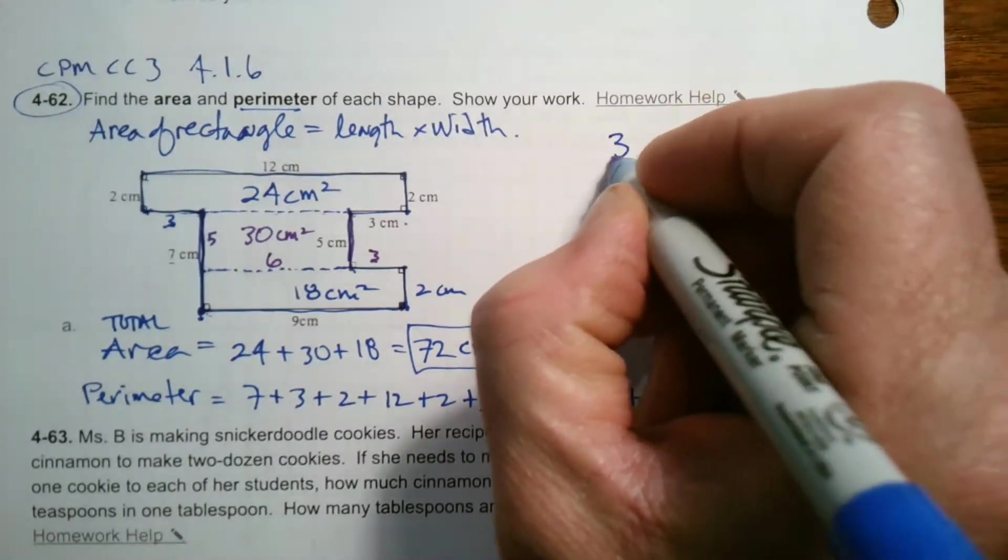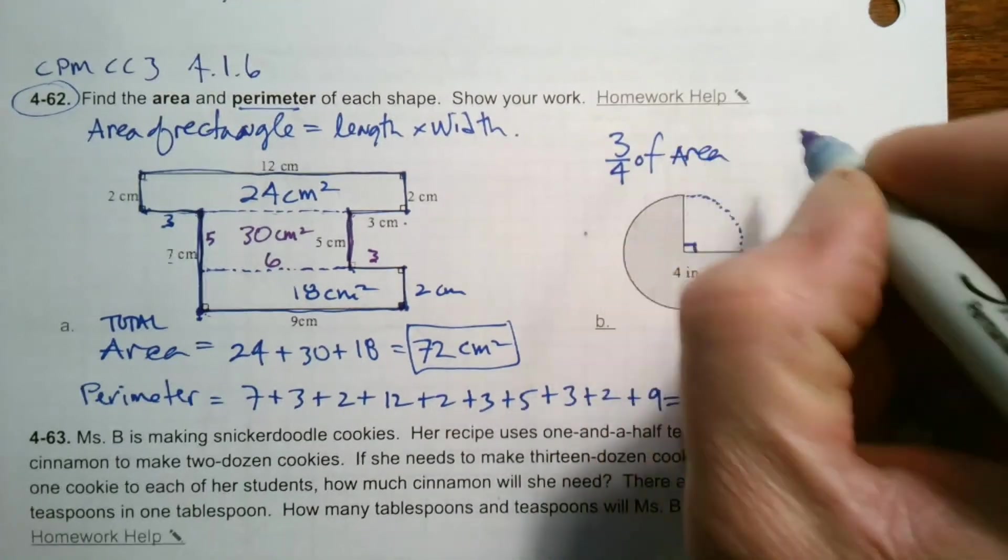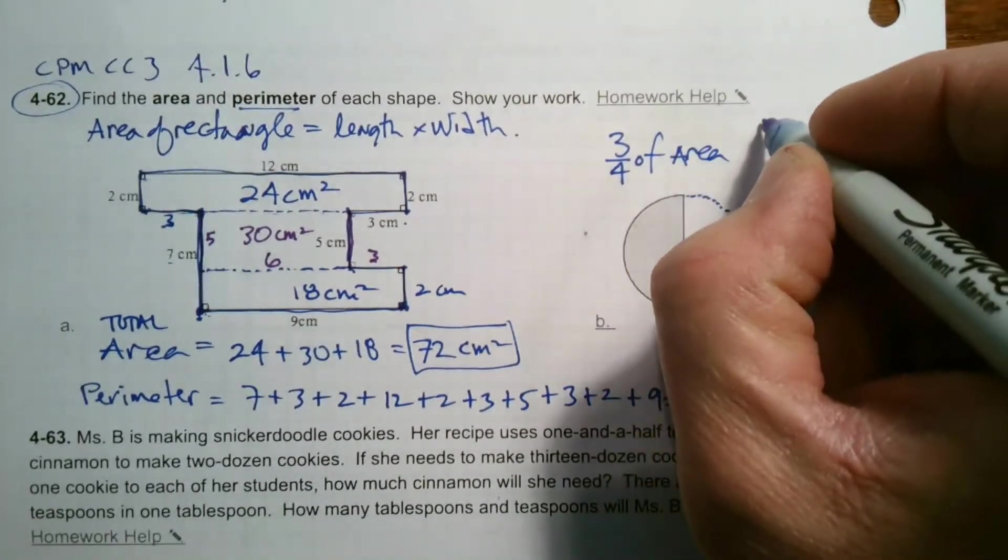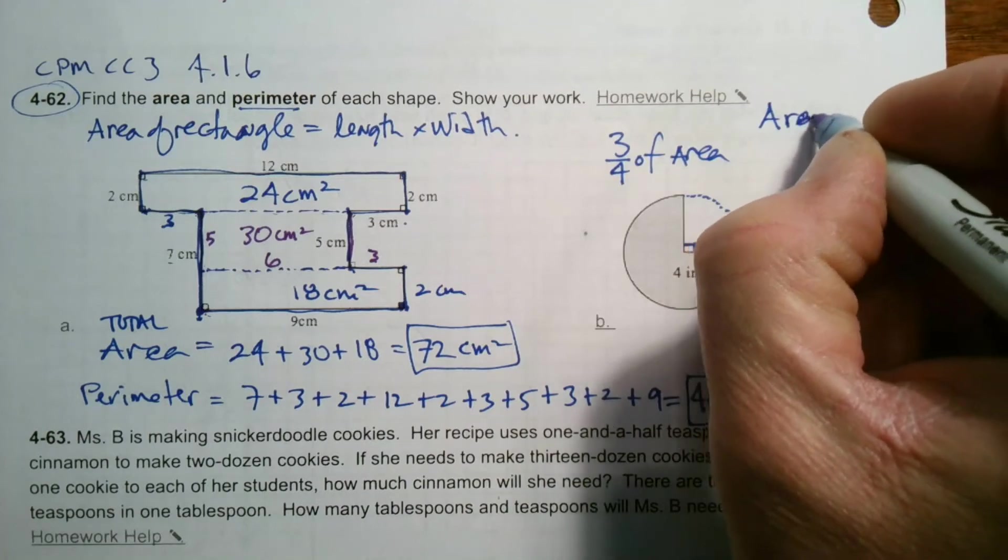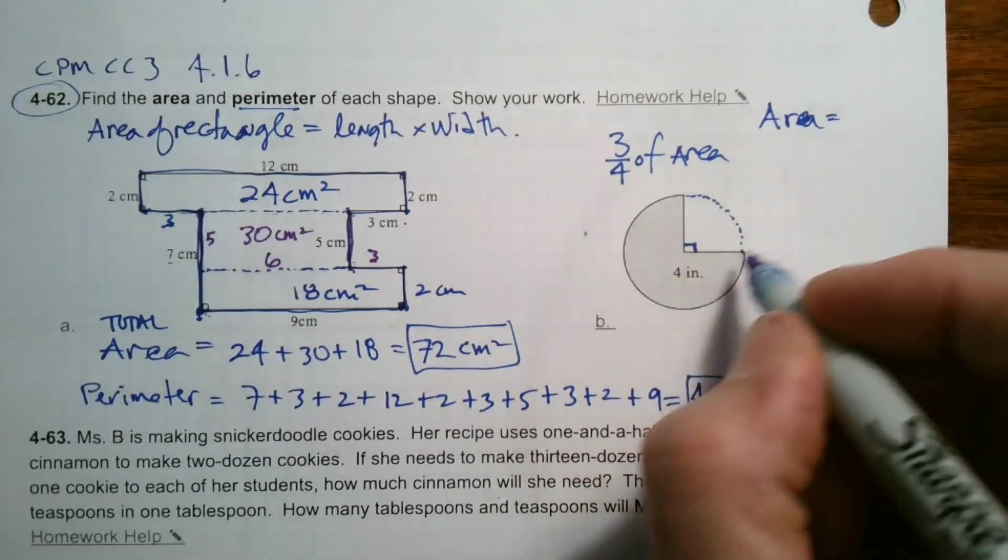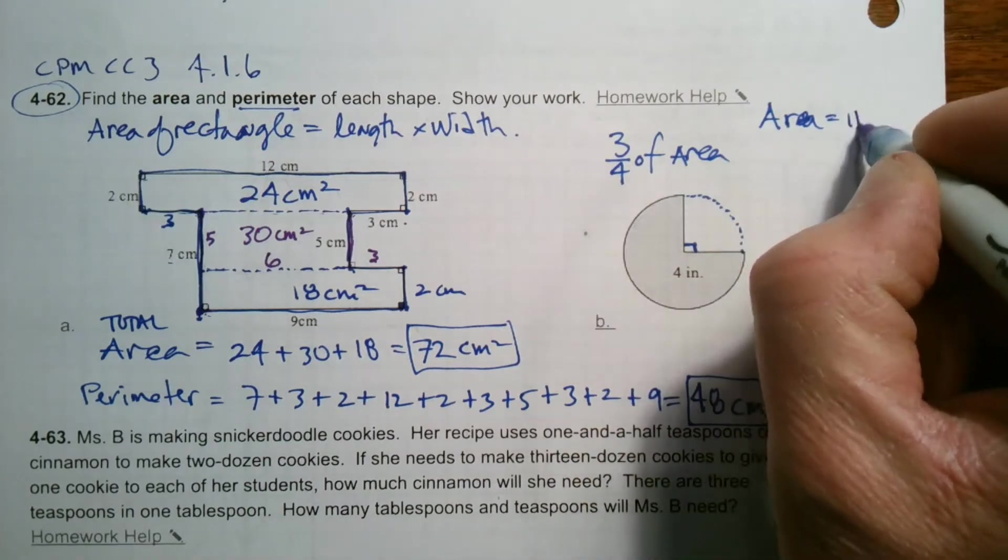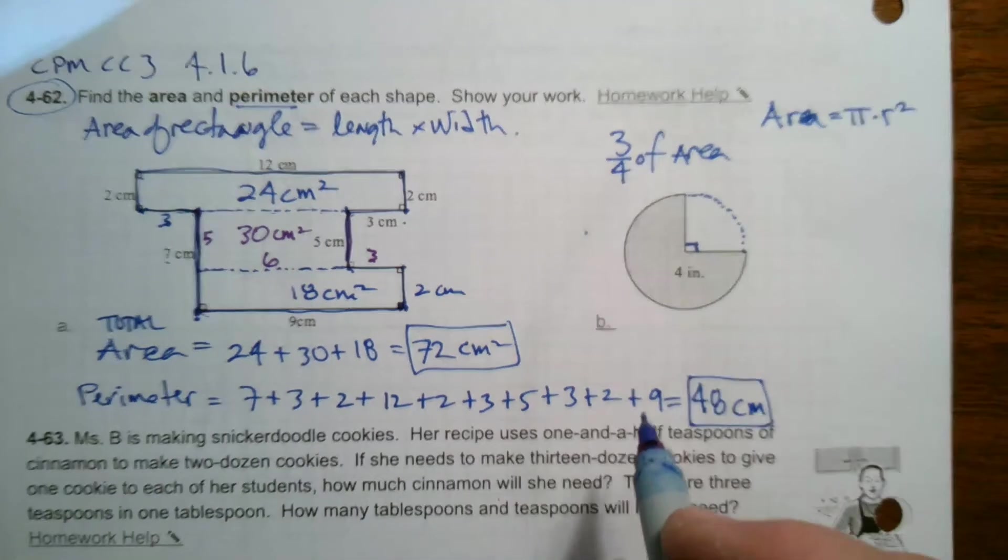So if I can find the area, it's going to be three fourths of the area, right? And remember area of a circle, we've got a couple rules. We've got to memorize here. Area of a circle is always the radius squared. So it's pi times the radius squared. That's the area of the circle.